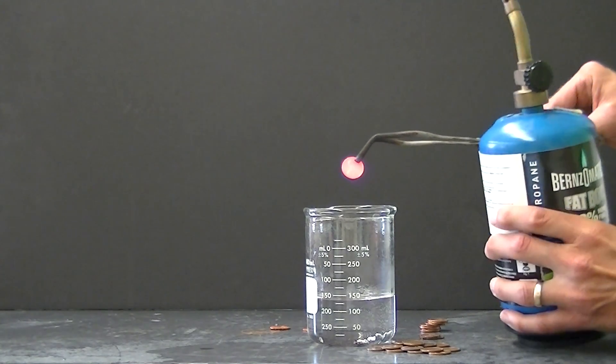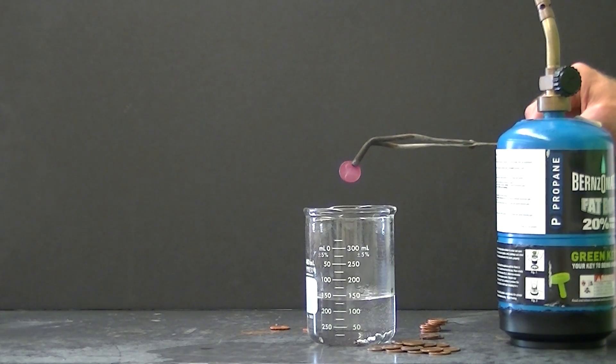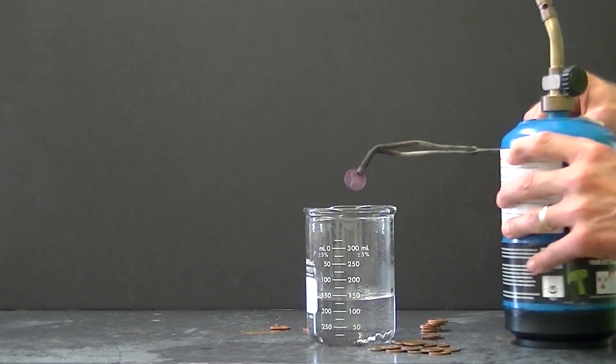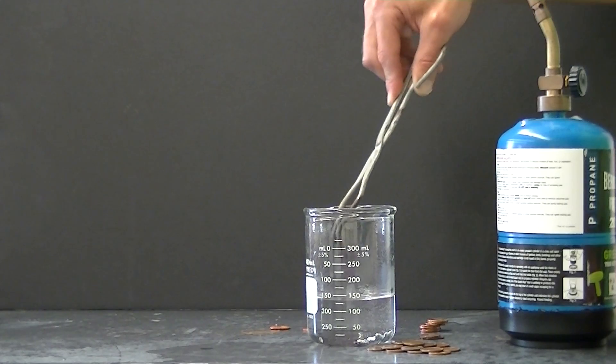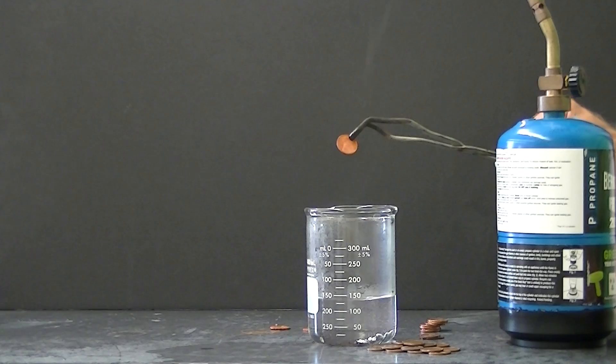I remove the flame to observe the formation of copper oxide. And then to remove the copper oxide coating I just place that in the water. You've got your nice shiny penny when you're done.